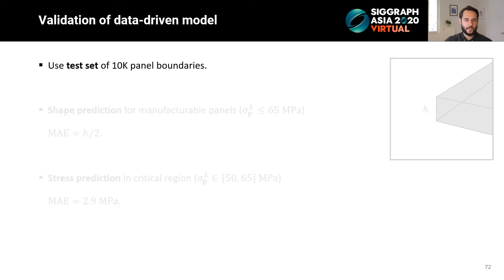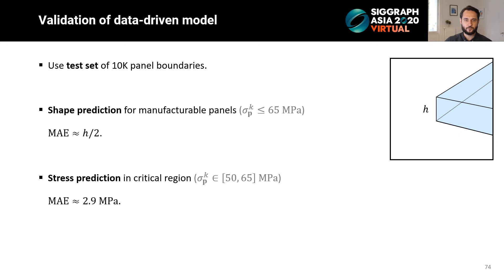To validate the accuracy of the model, we retain a test set of 10,000 panels from the database. The shape prediction has mean absolute error of half the panel thickness for manufacturable panels. Stress prediction for the critical region of 50 to 65 MPa has mean absolute error of 2.9 MPa, which is acceptable for our application.